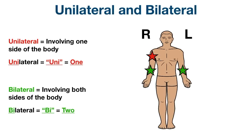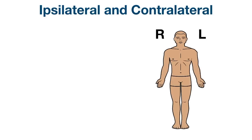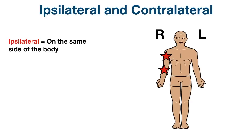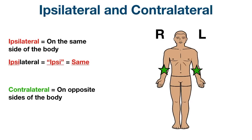Finally, we have ipsilateral and contralateral. Ipsilateral means on the same side of the body — for example, if a patient presents with a laceration and an abrasion both on their right arm, those injuries are ipsilateral to one another. The prefix ipsi means same, which helps you remember ipsilateral means the same side. Contralateral means on opposite sides of the body — for example, a laceration on the right arm and an abrasion on the left arm would be contralateral to each other. The prefix contra means opposite, which helps you remember contralateral means opposite sides.